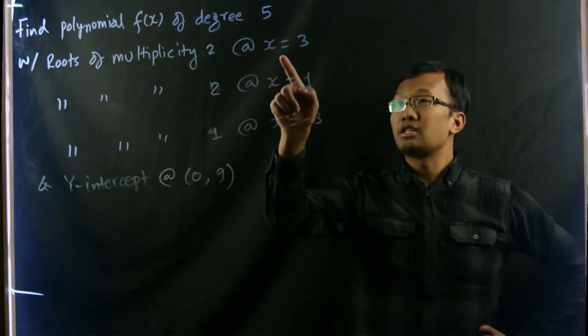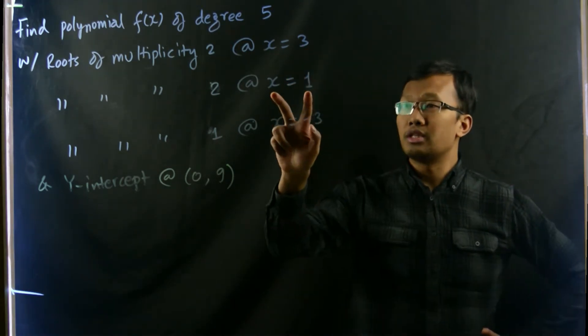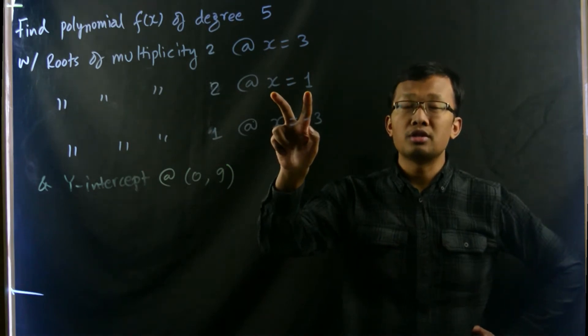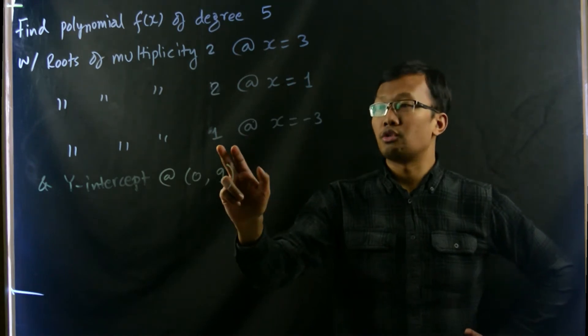That means x equals 3, this root repeats twice. This root x equals 1 also repeats for two times, and x equals negative 3 is a root just for one time.